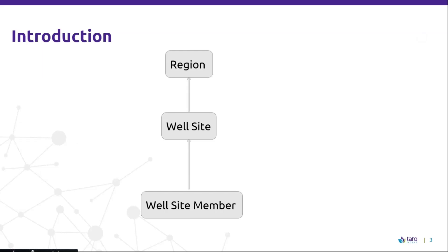Drill down hierarchies allow your mobile users to view data at the lowest level that data can be set and select only the record that your mobile users want to collect data on within a single job. We also have drill down hierarchy filters that further target the data that mobile users can use from Salesforce for a particular job. You can set up many conditions in your drill down hierarchy and only records that fulfill all conditions will be presented. There are a maximum of five drill down hierarchies in a single job and each drill down hierarchy has a maximum of five levels.